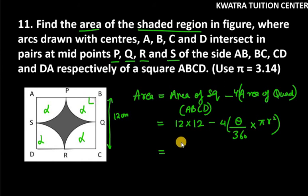So it is 144 minus 4. Then we have 90 over 360 into pi. Pi needs to be taken as 3.14, R square. You can clearly see that R is 6 cm for 1 quadrant, so we need to put 6 into 6.